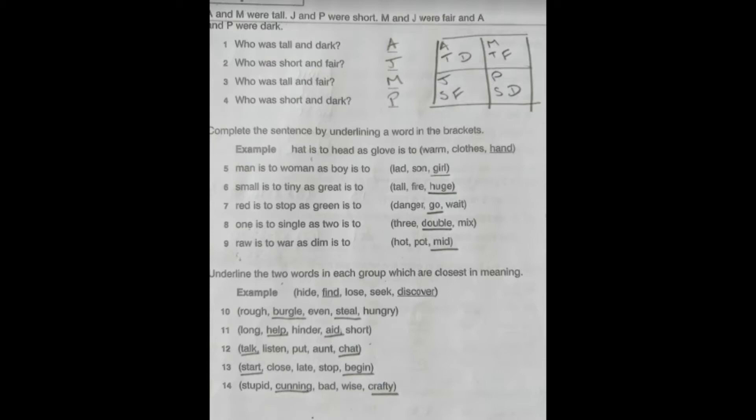Question 5: man is to woman as boy is to girl. Small is to tiny as great is to huge. Question 7: red is to stop as green is to go. Question 8: one is to single as two is to double. And question 9: raw is to war as dim is to mid. Raw and war, it's just reversed the order of the letters, so the R has gone at the end and W at the beginning. So the same with dim, the M has gone at the beginning and the D at the end.